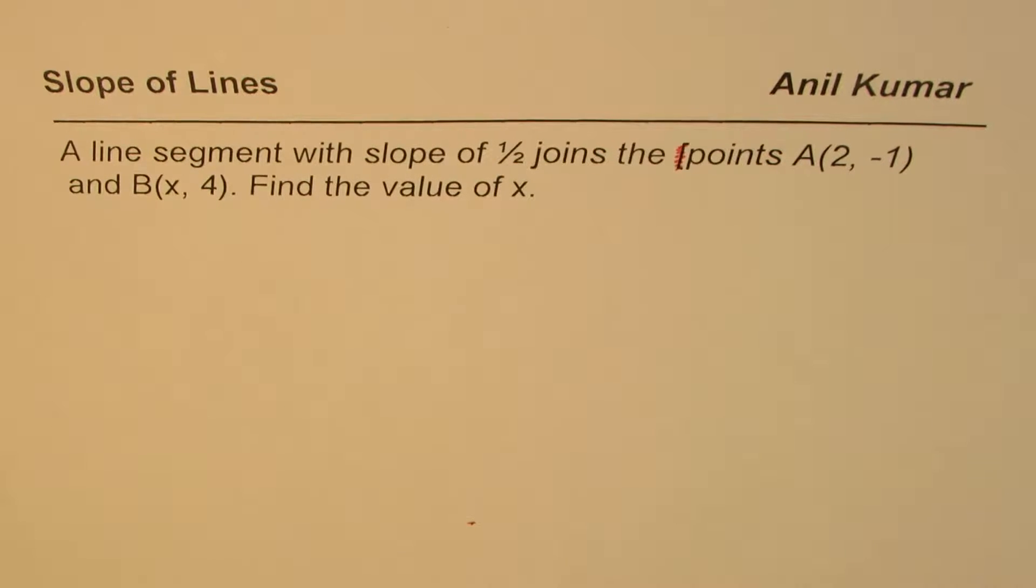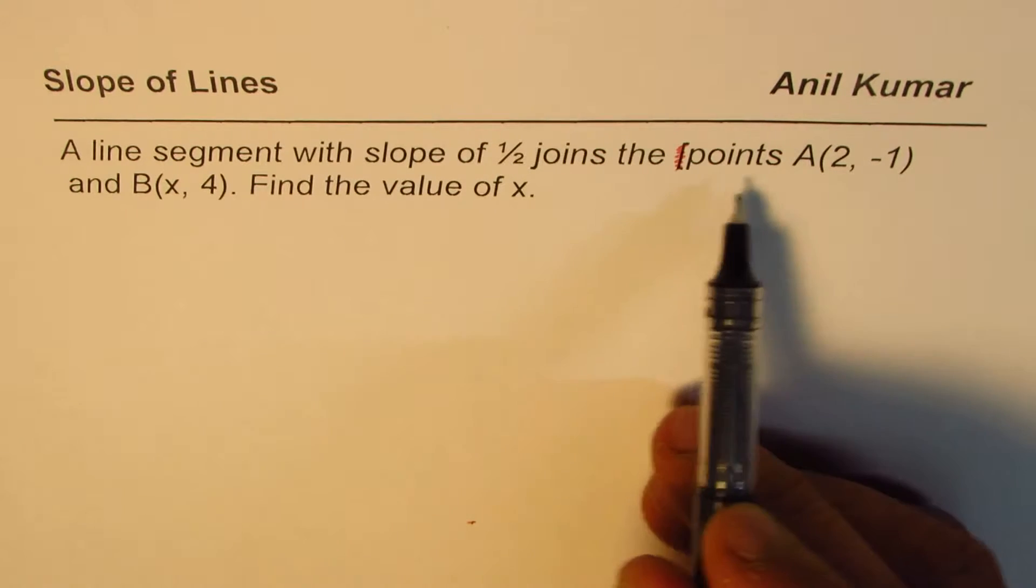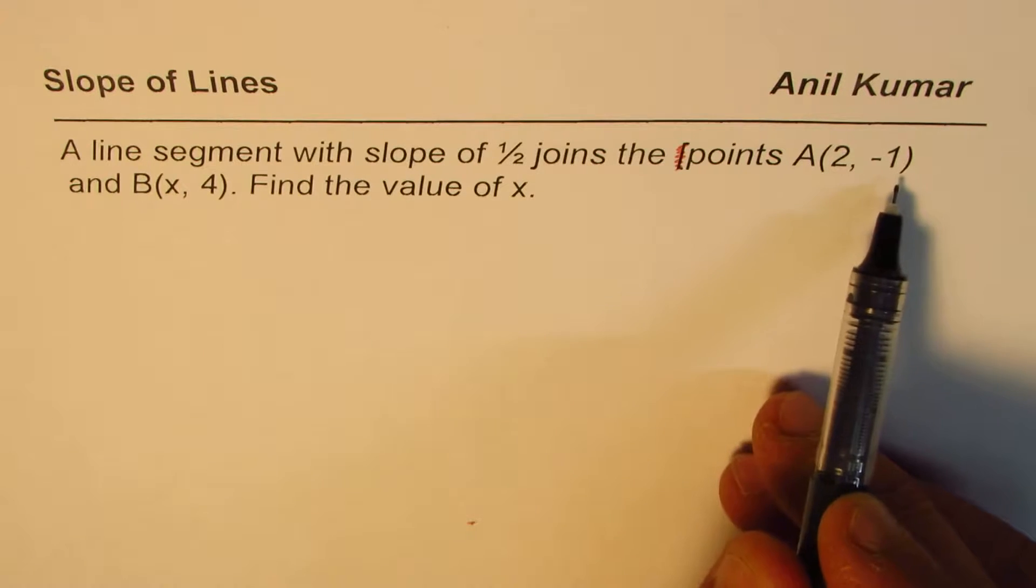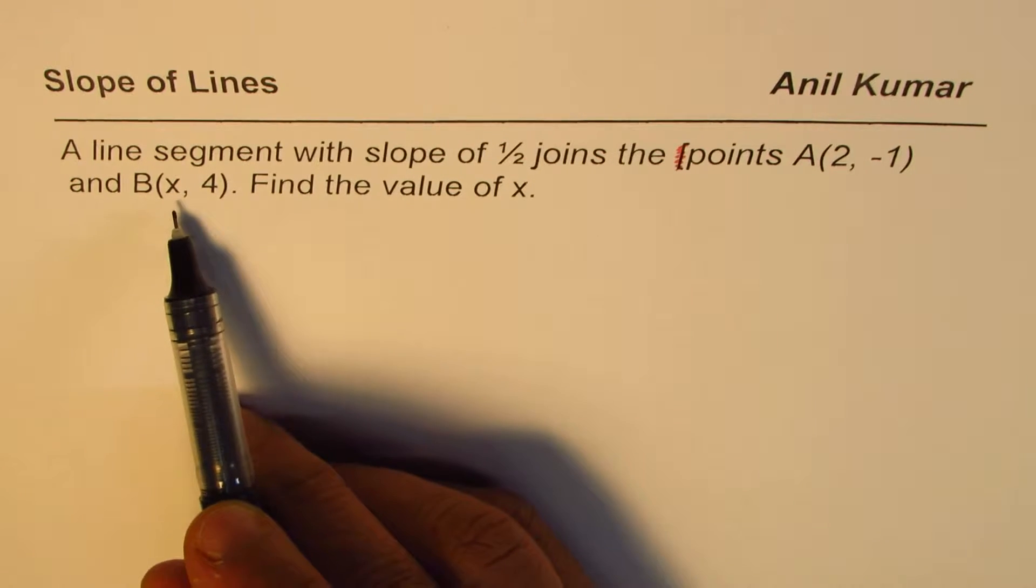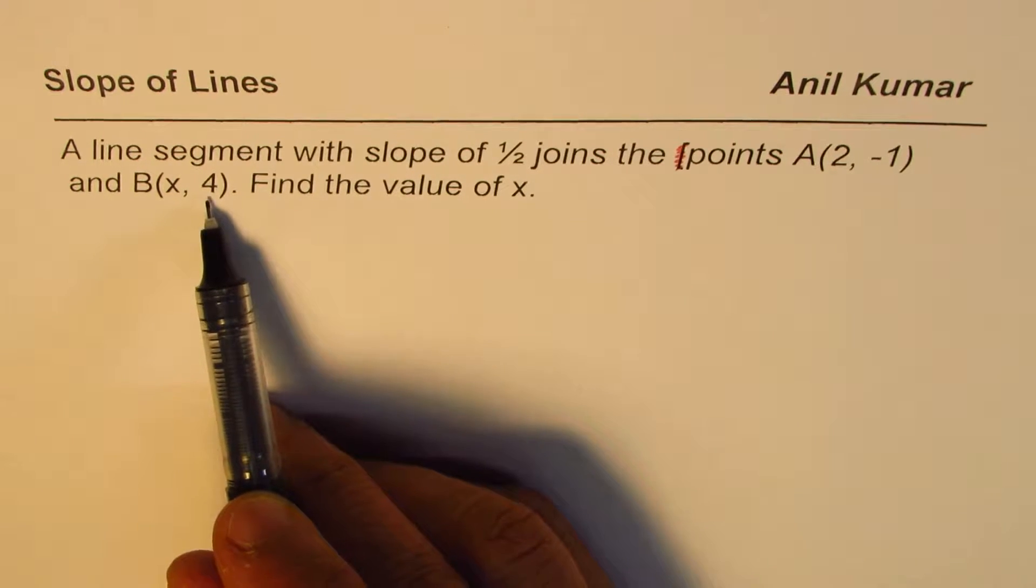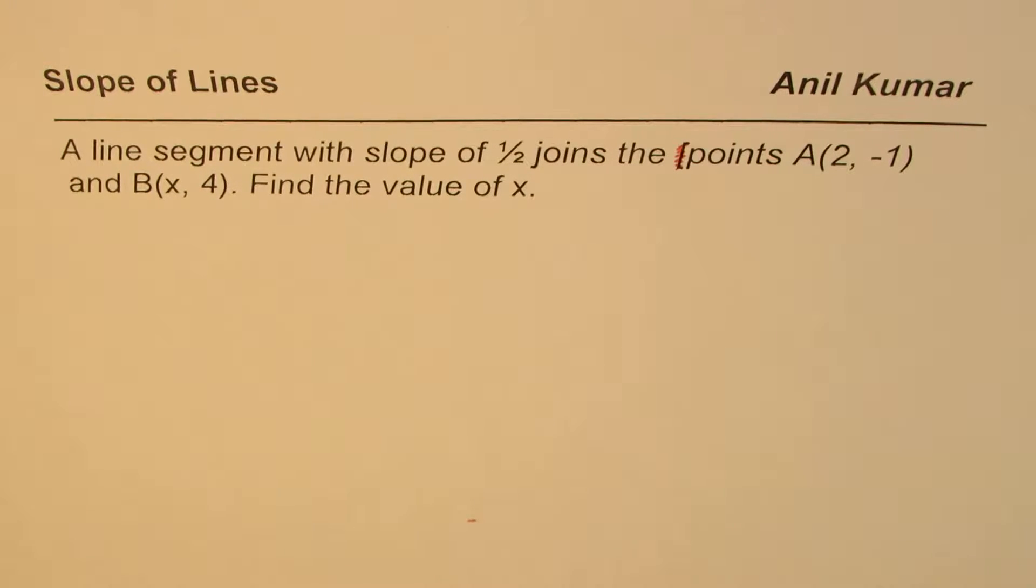I'm Adil Kumar sharing with you a very interesting question on slope of lines. A line segment with slope of 1/2 joins the points A(2, -1) and B(x, 4). Find the value of x.